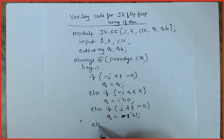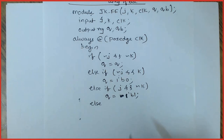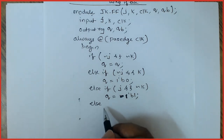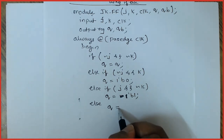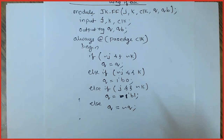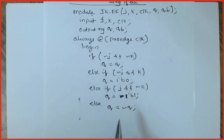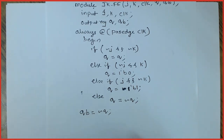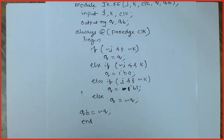Else — the last condition. When J is equal to 1 and K is equal to 1, Q is assigned with the inverted version of its previous value, which is nothing but toggling. This completes the if-else statement. I have not used the begin keyword, so no need for end keyword. Outside the if-else, I write QB is equal to the inverted version of Q. Then I end the always block and end module.